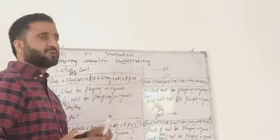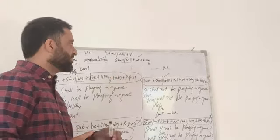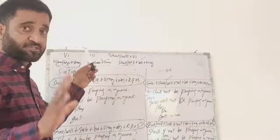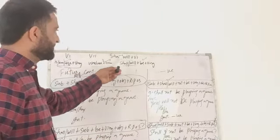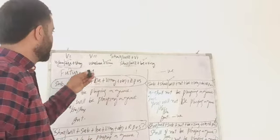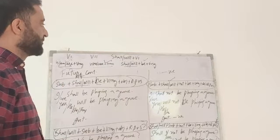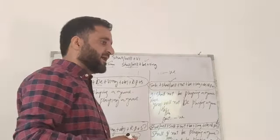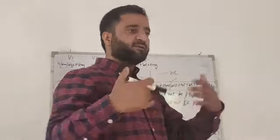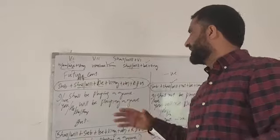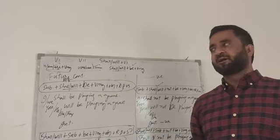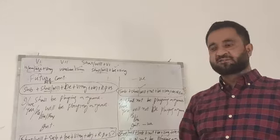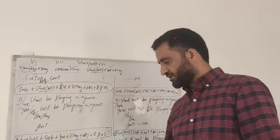With this we completed another three structures: present continuous, past continuous and future continuous. So far we have discussed present indefinite, past indefinite, future indefinite, present continuous, past continuous and future continuous. In my next two lectures we will complete the structures of tenses, and after that we will start the usage of the tenses. Thanks a lot.